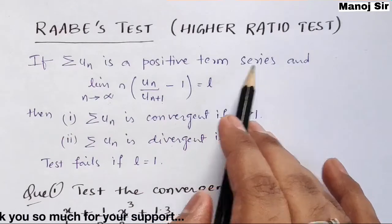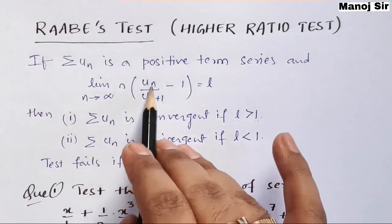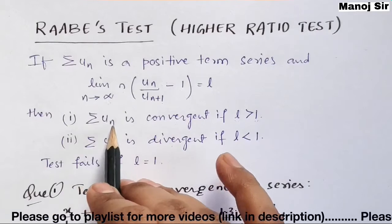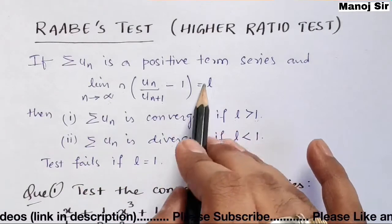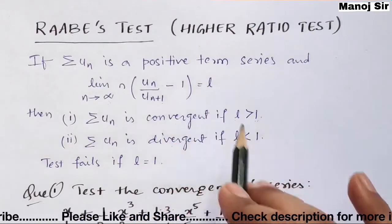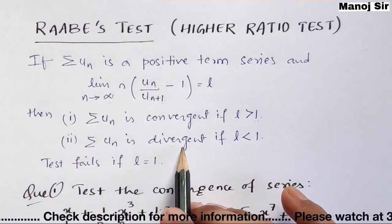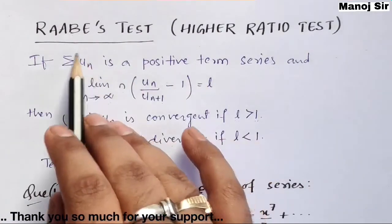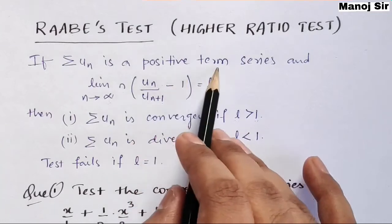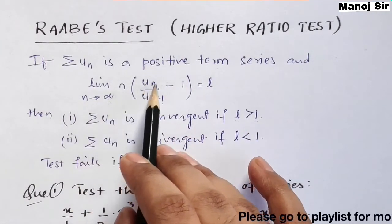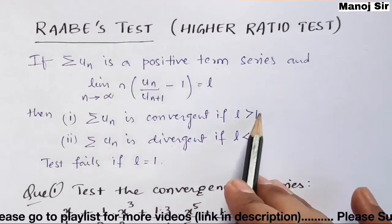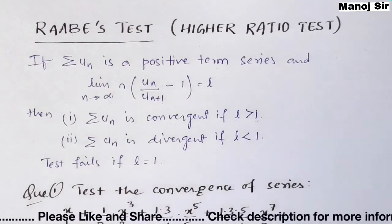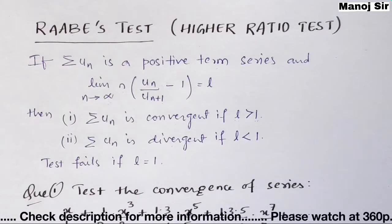If summation un is a positive term series and the limit as n tends to infinity of n times (un / un+1 minus 1) equals L, then: the series is convergent if L is greater than 1, the series is divergent if L is less than 1, and the test fails when L equals 1.